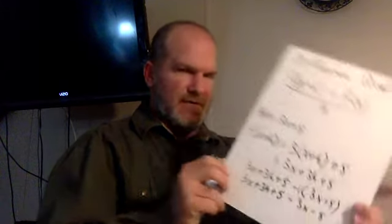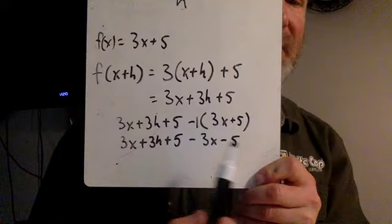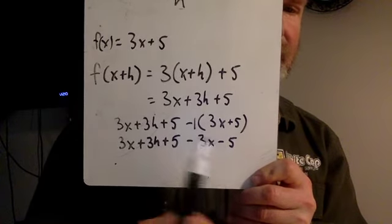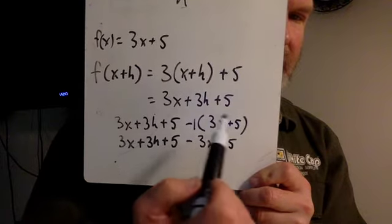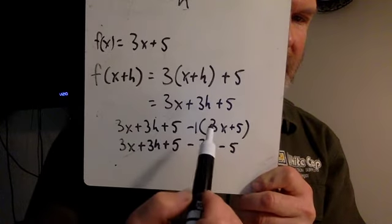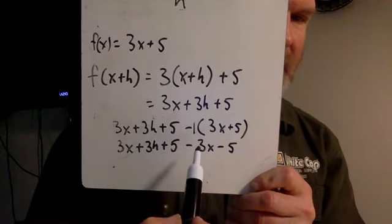So when you distribute the negative 1 through, you end up with 3x plus 3h plus 5. That first part didn't change. Then minus 3x and minus 5. So if you're not subtracting 5 there, you're going to mess the whole thing up. All right, that's distributing the negative 1 through. Both these become negative. The 3x and the 5 are both positive. Now they're both negative.